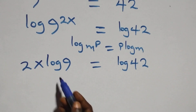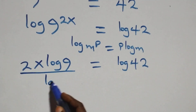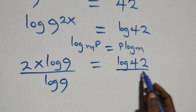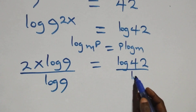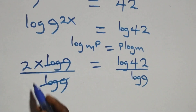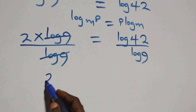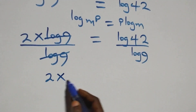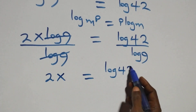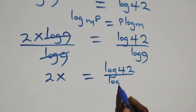Next step here, divide both sides by log 9. Divide this side by log 9, and also divide this side by log 9. Log 9 cancels each other, and we have 2x equals log 42 over log 9.